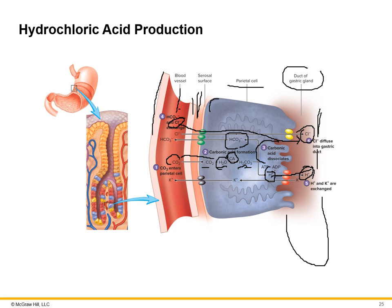To go deeper: as H+ is dumped into the gastric pit via antiporting, a potassium ion is anti-ported into the parietal cell and then dumped into blood. As Cl- is dumped into the gastric pit, the excess bicarbonate ion produced from carbonic acid dissociation is also dumped into the blood vessel. Thus, the bicarbonate ion unnecessary for HCl production is released to blood, while potassium is exchanged as part of the hydrogen ion antiport process.